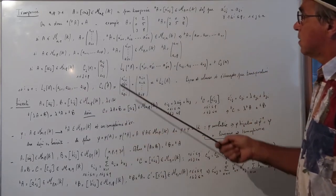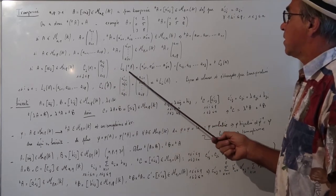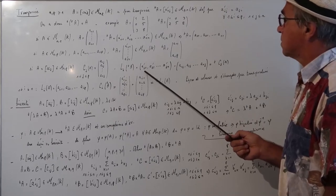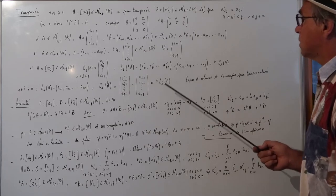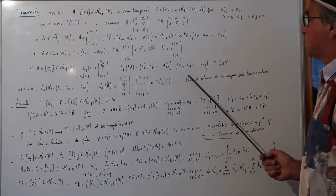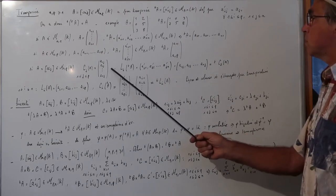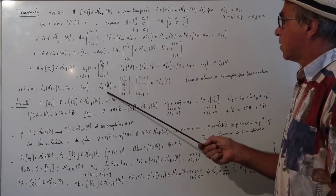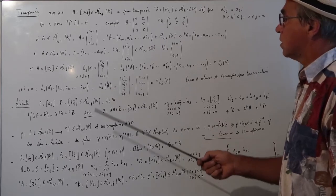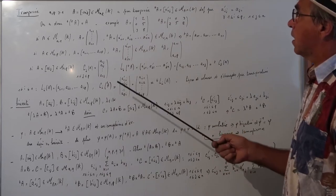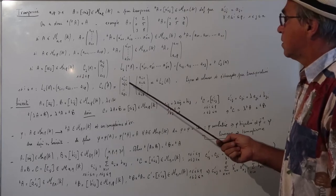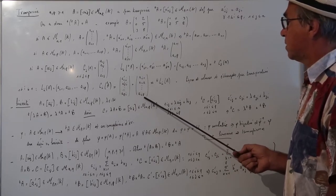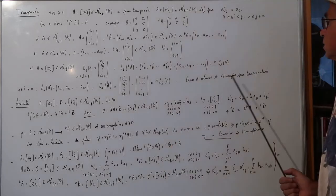Pour une matrice A dans M_{NP}, la colonne J de A correspond à la ligne J de TA : la ligne J de TA est la transposée de la colonne J de A. De même, la ligne I de A correspond à la colonne I de TA : la colonne I de TA est la transposée de la ligne I de A. Donc lignes et colonnes sont bien échangées par transposition.